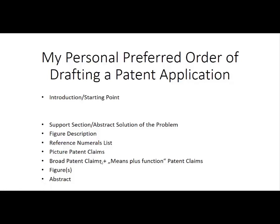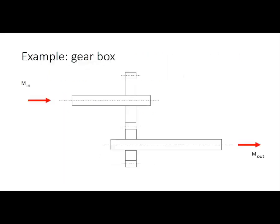I also use the support section to connect the figure description, which is very specific, with the broad wording of the broad patent claims. I also add effects of the elements of the patent claims for better understanding of the invention. After that I do the prior art description, which is very simple — all that is needed is to take the abstract sections of the prior art documents and reword them in proper language. And finally, if required, I add a problem which is solved by the invention. This is how I arrive at the patent application.